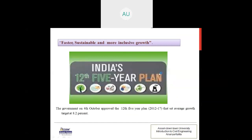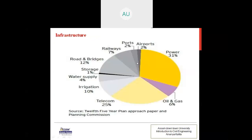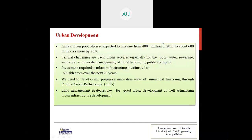The next is India's 12th Five-Year Plan. The theme of the plan is 'Faster, Sustainable, and More Inclusive.' The government on 4th October approved the 12th Five-Year Plan 2012–17, setting an average growth target of 8.2 percent.